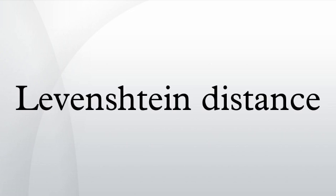The Levenshtein distance has several simple upper and lower bounds. These include: it is always at least the difference of the sizes of the two strings; it is at most the length of the longer string; it is zero if and only if the strings are equal. If the strings are the same size, the Hamming distance is an upper bound on the Levenshtein distance. The Levenshtein distance between two strings is no greater than the sum of their Levenshtein distances from a third string.